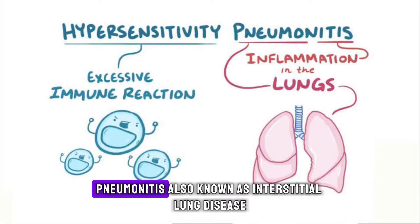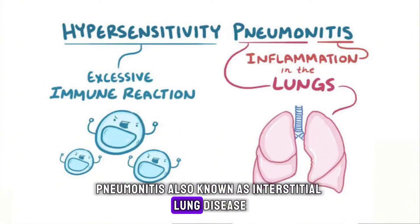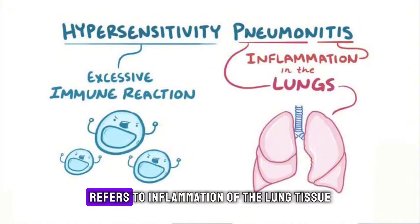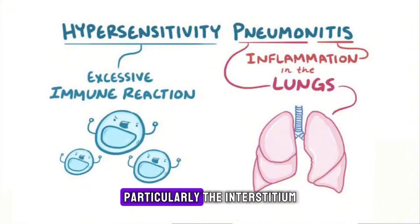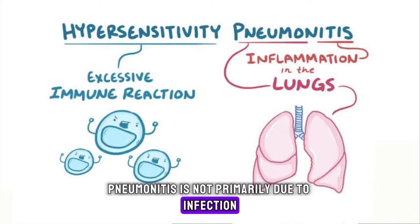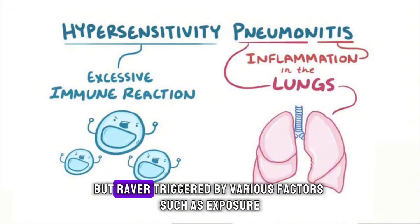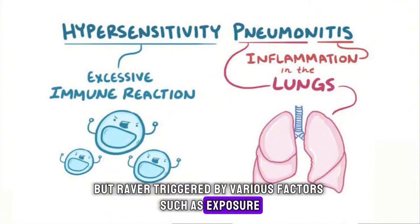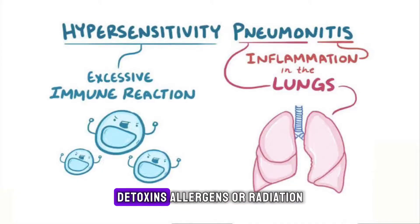On the other hand, pneumonitis, also known as interstitial lung disease, refers to inflammation of the lung tissue, particularly the interstitium. Unlike pneumonia, pneumonitis is not primarily due to infection, but rather triggered by various factors such as exposure to toxins, allergens, or radiation.